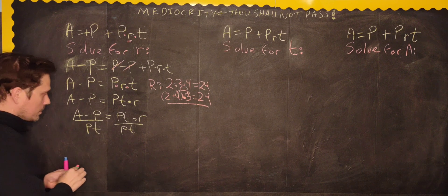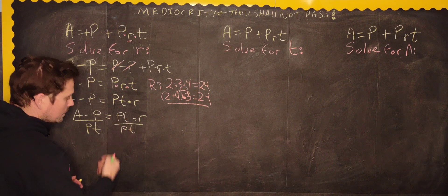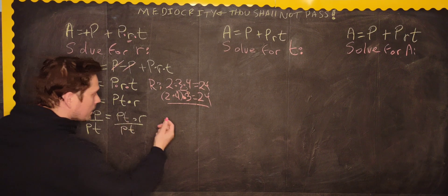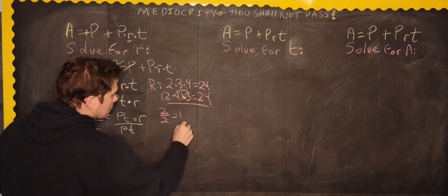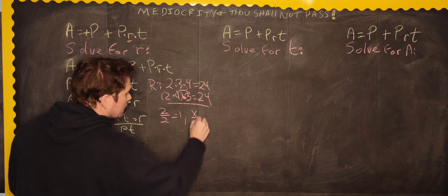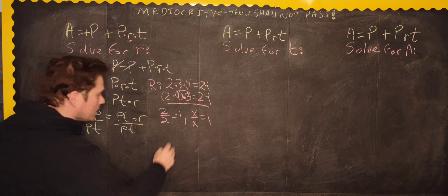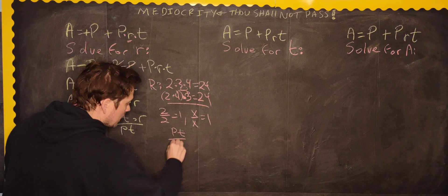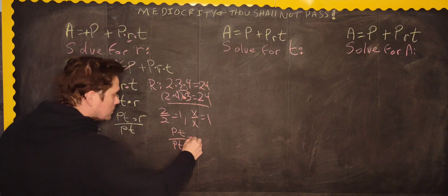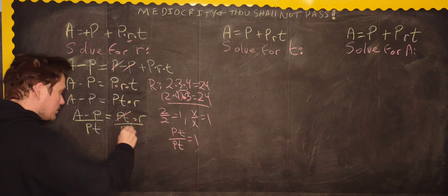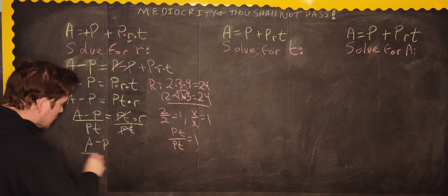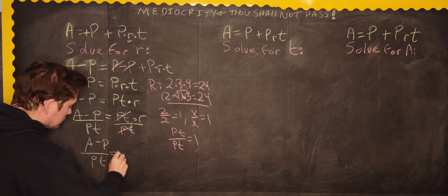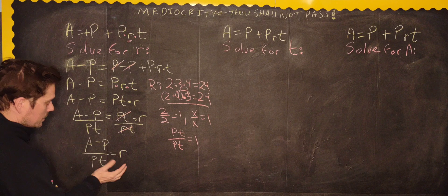So, this is PT. Beautiful thing now is, PT over PT is 1. Remember, anything divided by itself is 1. So, if you say, 2 divided by 2 is 1, well, if x divided by x is 1, then that means PT divided by itself is also equal to 1. Therefore, cancel, cancel, and all that remains is that A minus P over PT is equal to R. And then this is the answer.